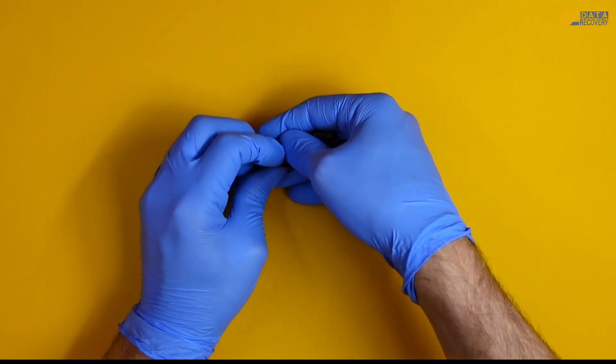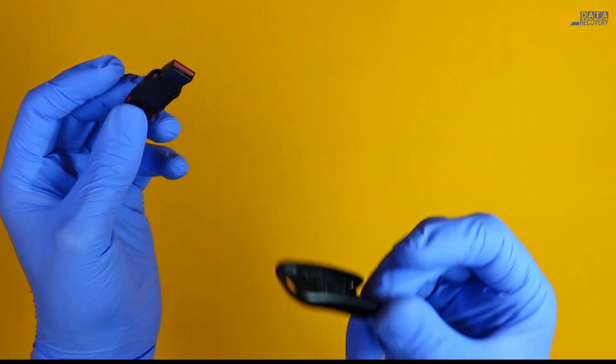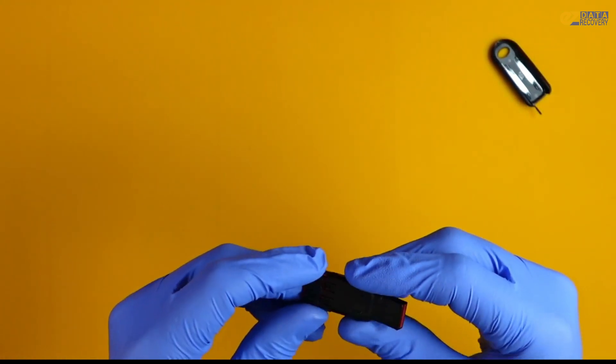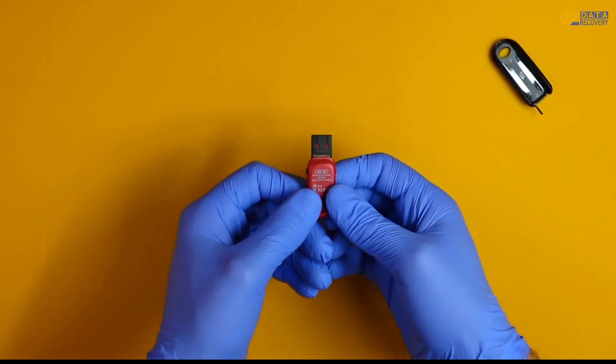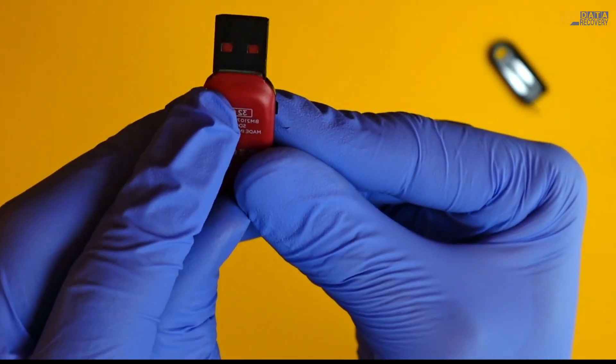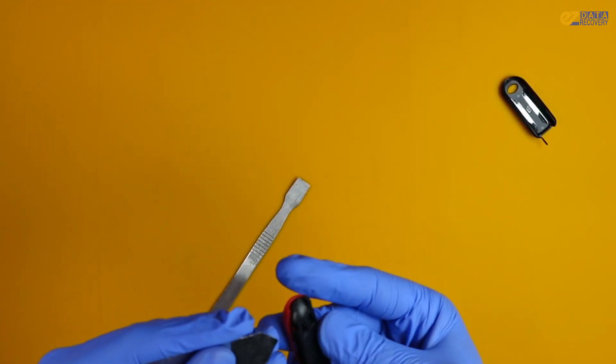We're going to get started with the data recovery process here. The first part of this process is exposing the PCB, the internals of this drive. And this may look a little extreme, a little destructive, but luckily for us, this is not a repair. This is a data recovery. And all we really care about is working with that data on that main PCB. So we're going to start by separating this into two parts, the inner and outer housing.